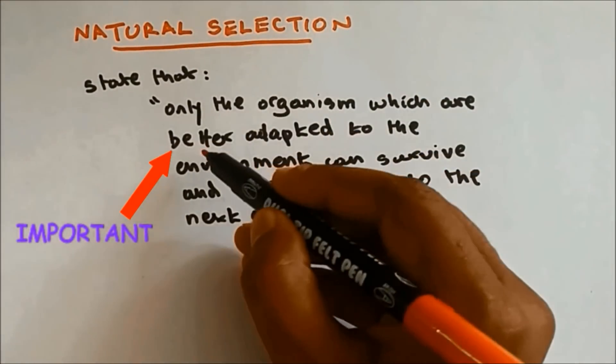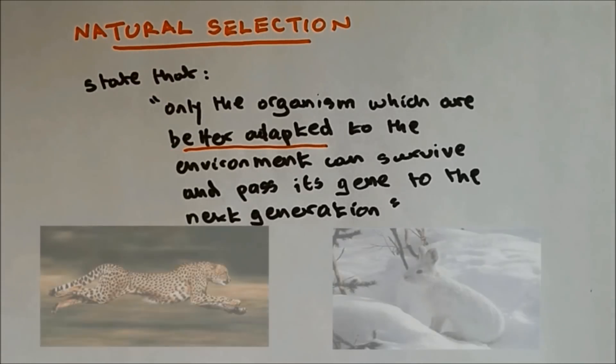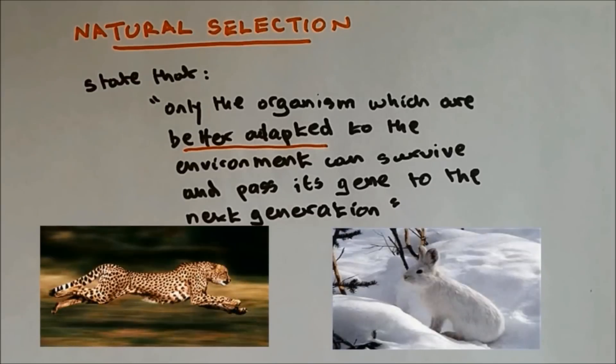Now, better adapted to the environment. What is meant by better adapted? An organism which has a greater adaptation will be able to survive. For example, it will be able to run fast. It will be better camouflaged. So the species will be able to escape from the predators and will be able to reproduce.